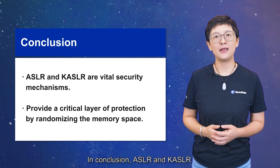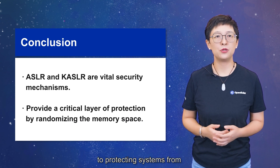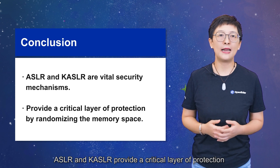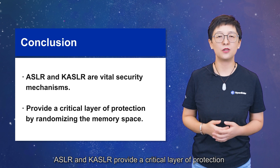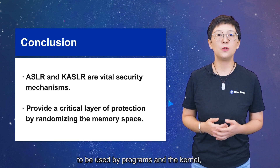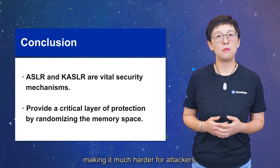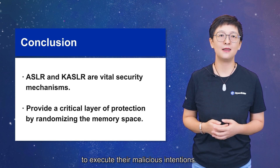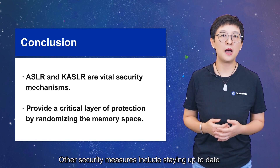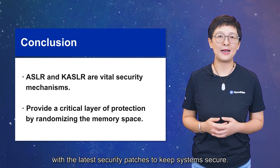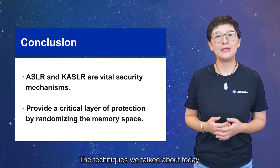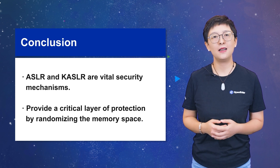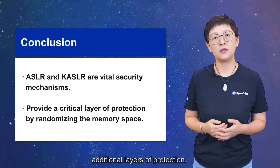In conclusion, ASLR and KASLR are security mechanisms that are vital to protect systems from buffer overflow and other attacks. They provide a critical layer of protection by randomizing the memory space used by programs and the kernel, making it much harder for attackers to locate the code they need to execute their malicious intentions. Other security measures include staying up to date with the latest security patches. The techniques discussed today are effective for common attacks, but emerging threats will require additional layers of protection.